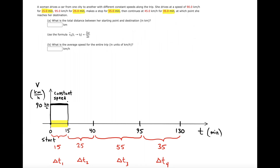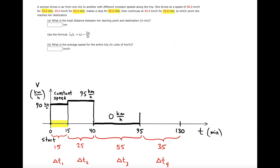After that, she suddenly increases velocity to 95 kilometers per hour for 25 minutes. Then she makes a stop, so her velocity drops to zero for 55 minutes. Finally, she picks the speed back up to 45 kilometers per hour. We can shade in these blocks on the graph.